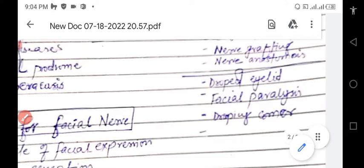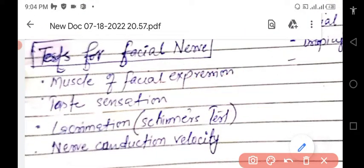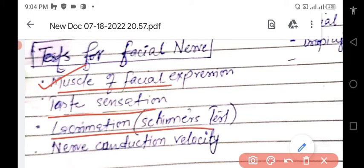Tests for facial nerve palsy include assessment of muscles of facial expression, taste sensation, lacrimation using the Schirmer test, and nerve conduction velocity.